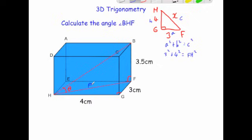So 3² is 9 + 4² is 16 equals FH², the length of this squared. So it's going to be 25 = FH², and if you square root that you get 5 = FH. So that means the distance here along the diagonal of the cuboid is equal to 5 centimeters. So let's put that on - this is equal to 5 centimeters there.